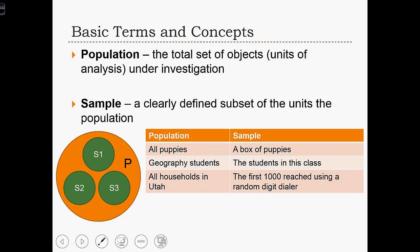Now we're going to define population and sample. Population is the total set of objects or units of analysis under investigation. A sample is a clearly defined subset of the units of the population.